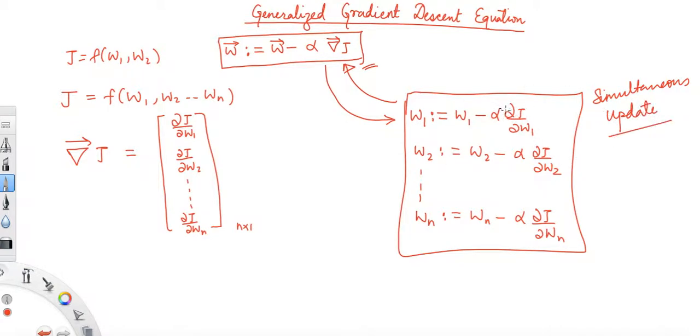It means that you have to calculate the partial derivative of J with respect to w1, with respect to w2, with respect to wn, simultaneously at a given point whose coordinates are w1, w2, ..., wn.